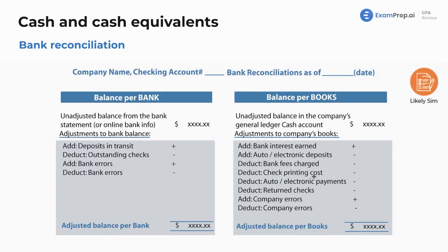Deduct check printing costs. Auto payments. Return checks — because really the only things the books would know about are just checks we wrote out. These are the items that the books are going to know about, and these are the items that the bank will know about. So deduct return checks. These are all items that you will definitely see on a cash track sim, which is a super common type of sim that you'll see.